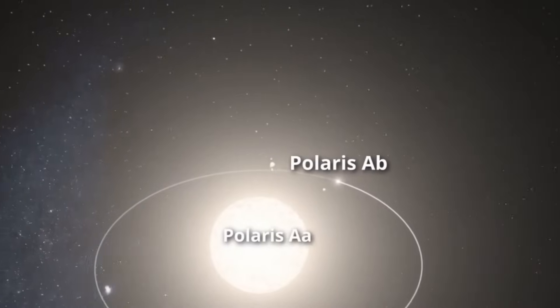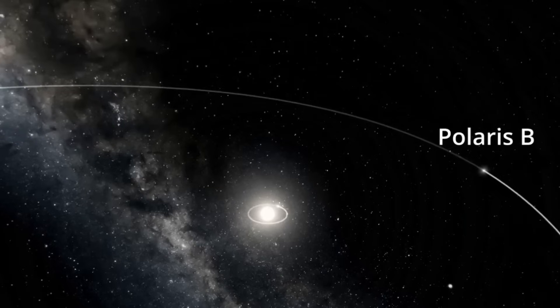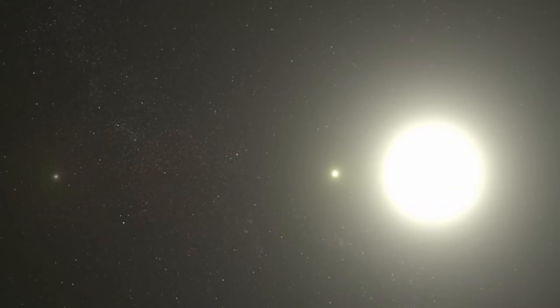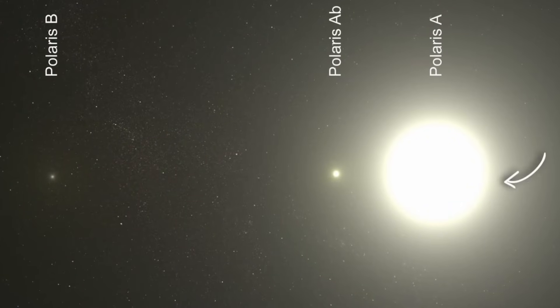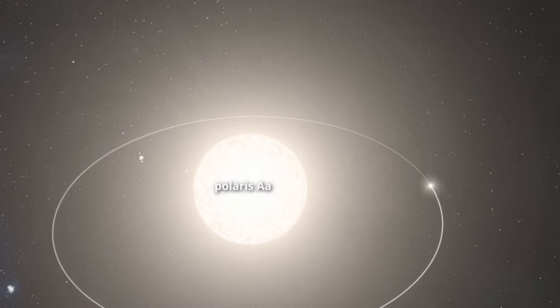The primary stars, Polaris AA and Polaris AB, appear as a single star to the naked eye, while a third companion, Polaris B, orbits the binary pair. The interactions among these stars create a gravitational pull, shaping their orbits and influencing their behaviors.